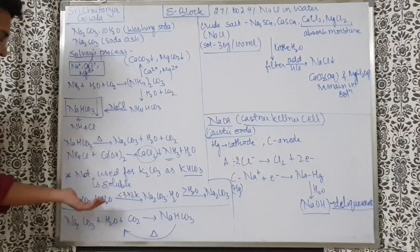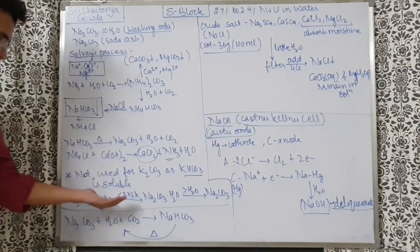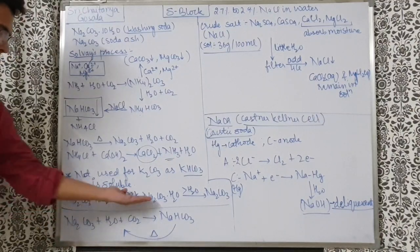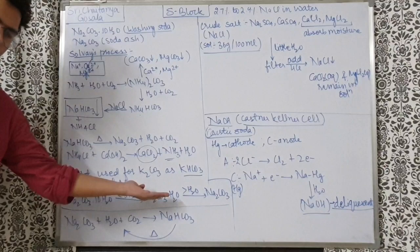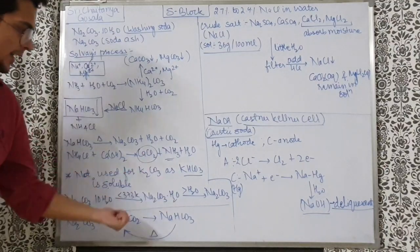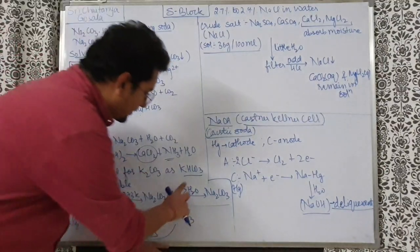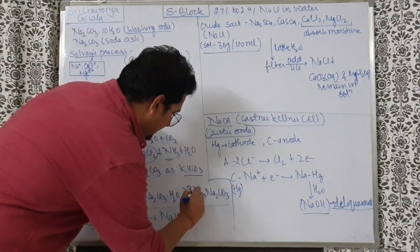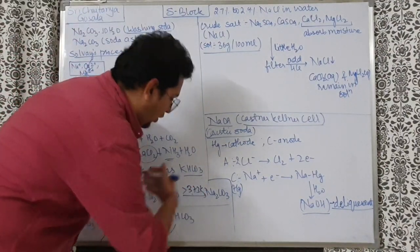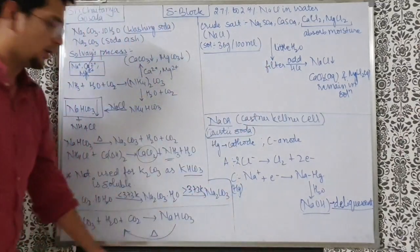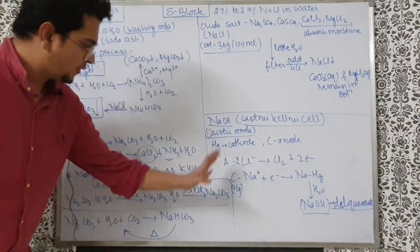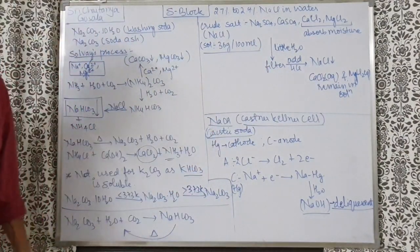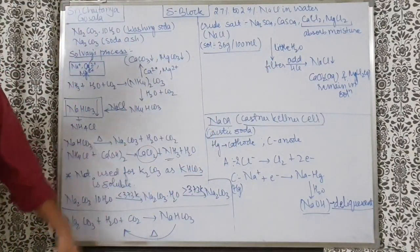Na2CO3·10H2O (washing soda) heated below 100°C forms the monohydrate of Na2CO3. Above 373 K, all the water of hydration goes away and you get Na2CO3, which is soda ash.